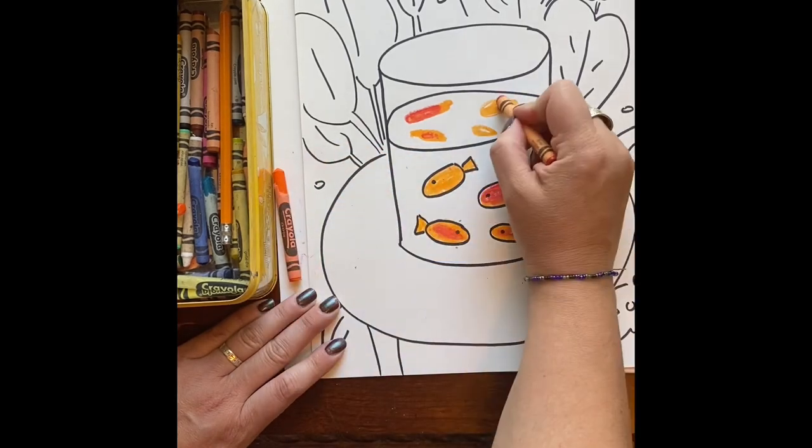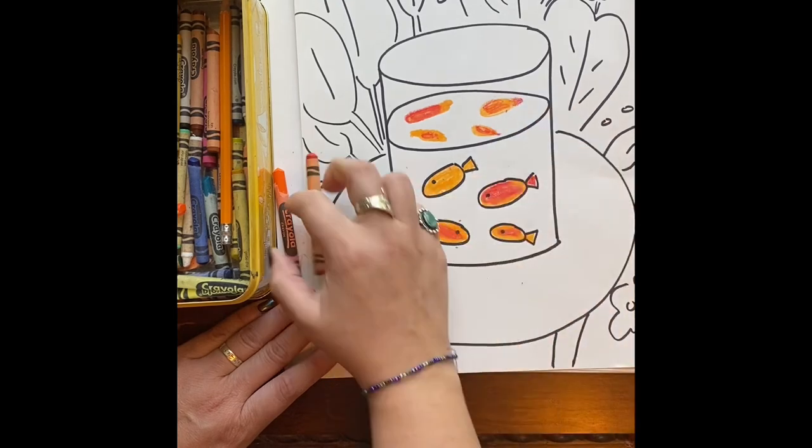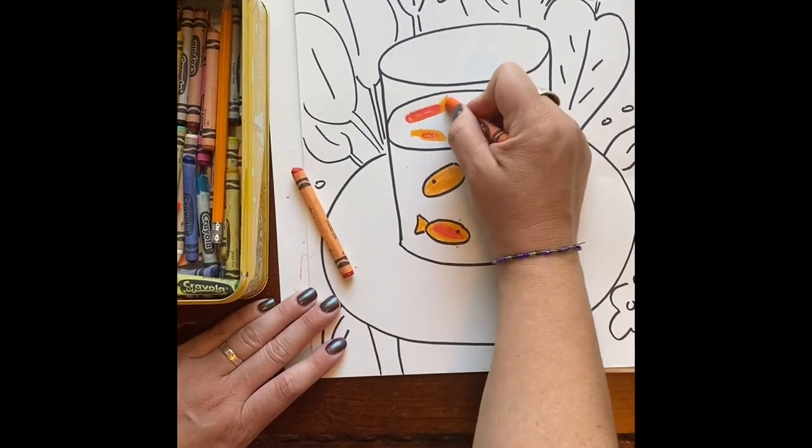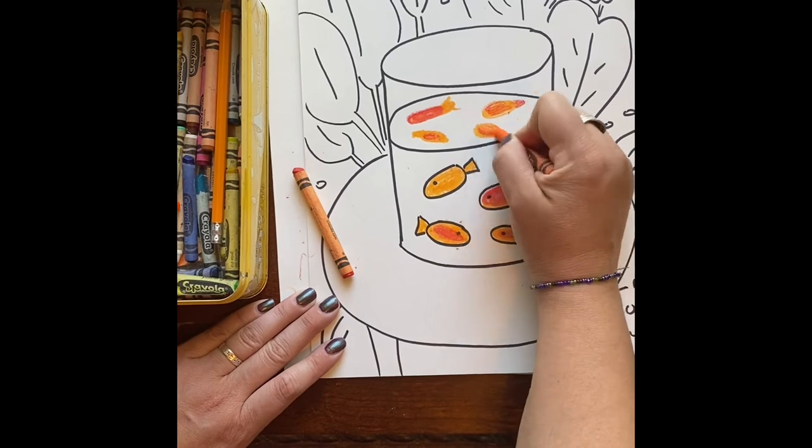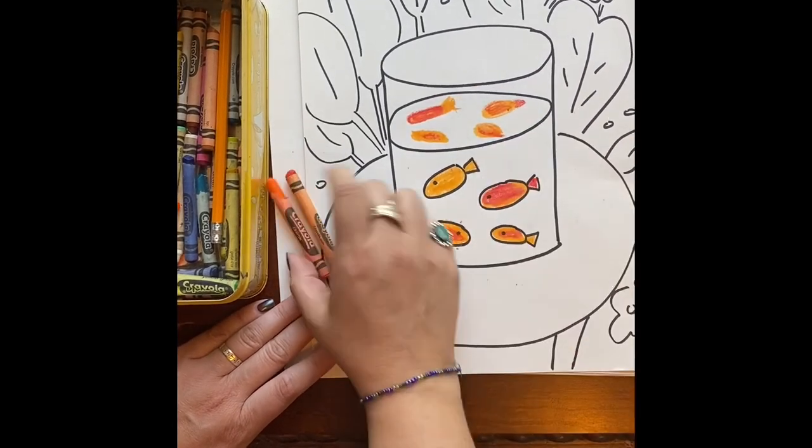So they don't look exactly like what you would see if the fish were in a mirror. They're not an exact reflection, but they're a reflection in the water. So you definitely want to have that up there.